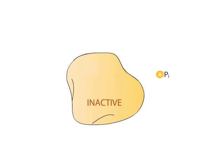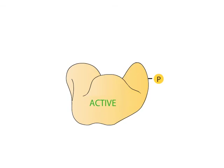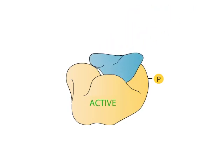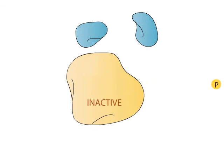The protein twists, and this can expose or hide the active site.